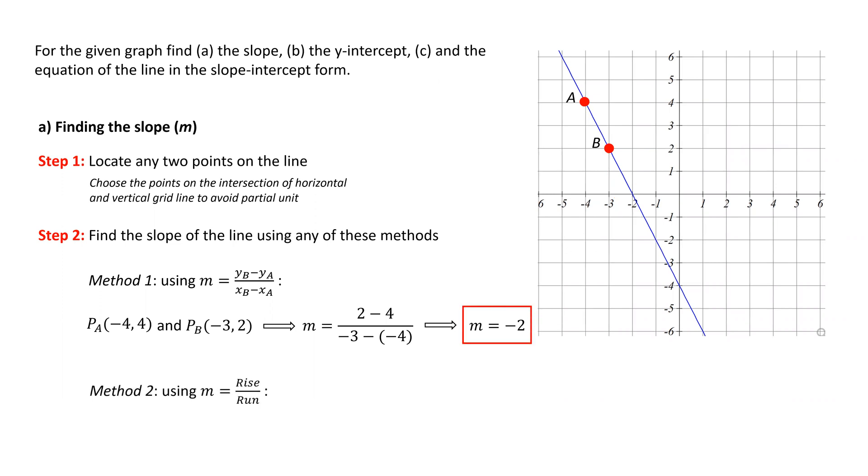Alternatively, we can use the formula of slope based on rise over run. Both formulas are the same, but for the second formula, we won't need the coordinates of the points. Instead, we directly determine the vertical change or rise and horizontal change or run of the path from one point to the other.